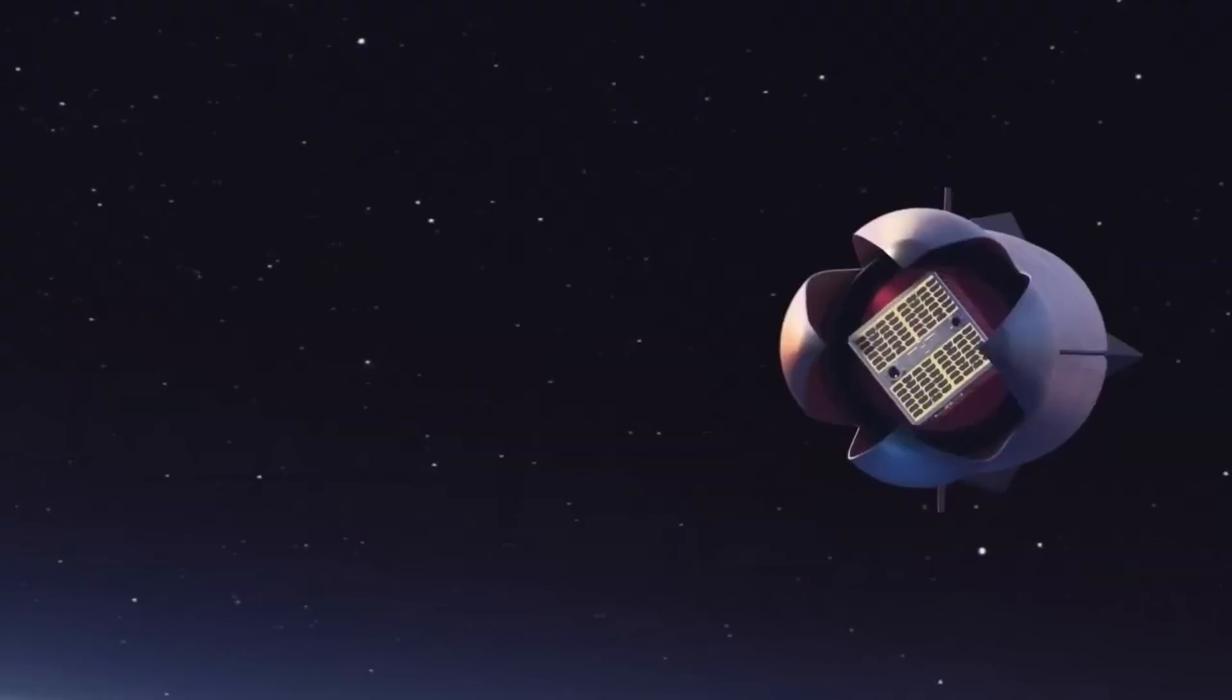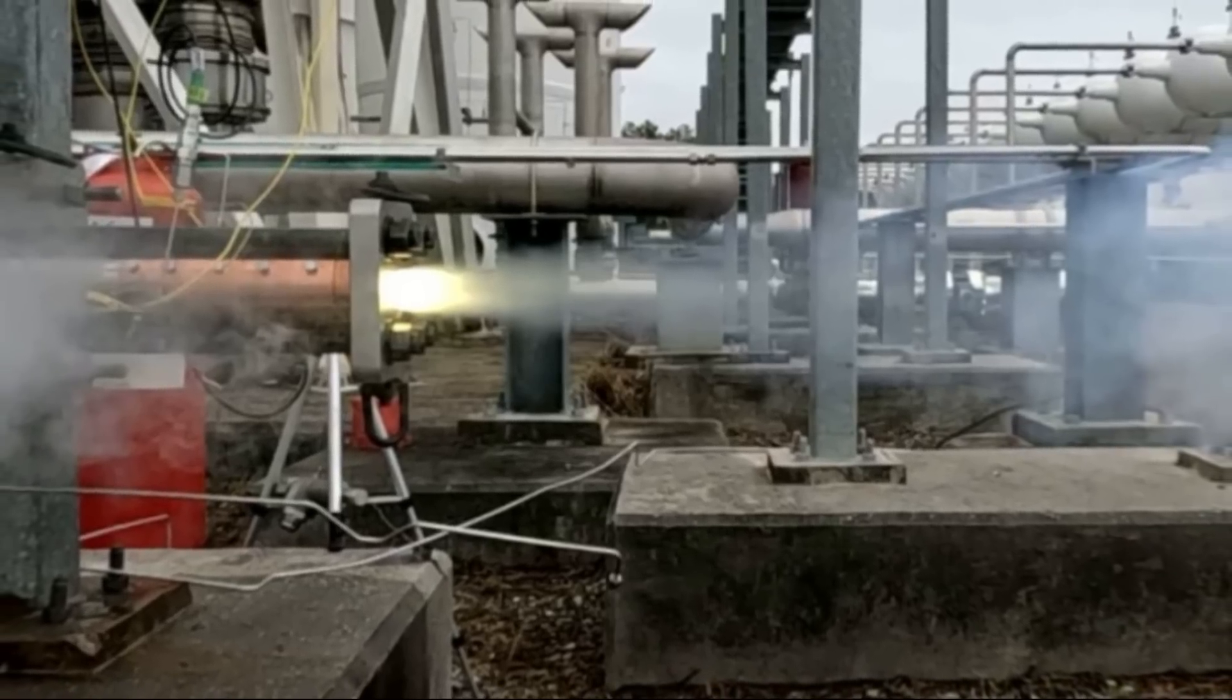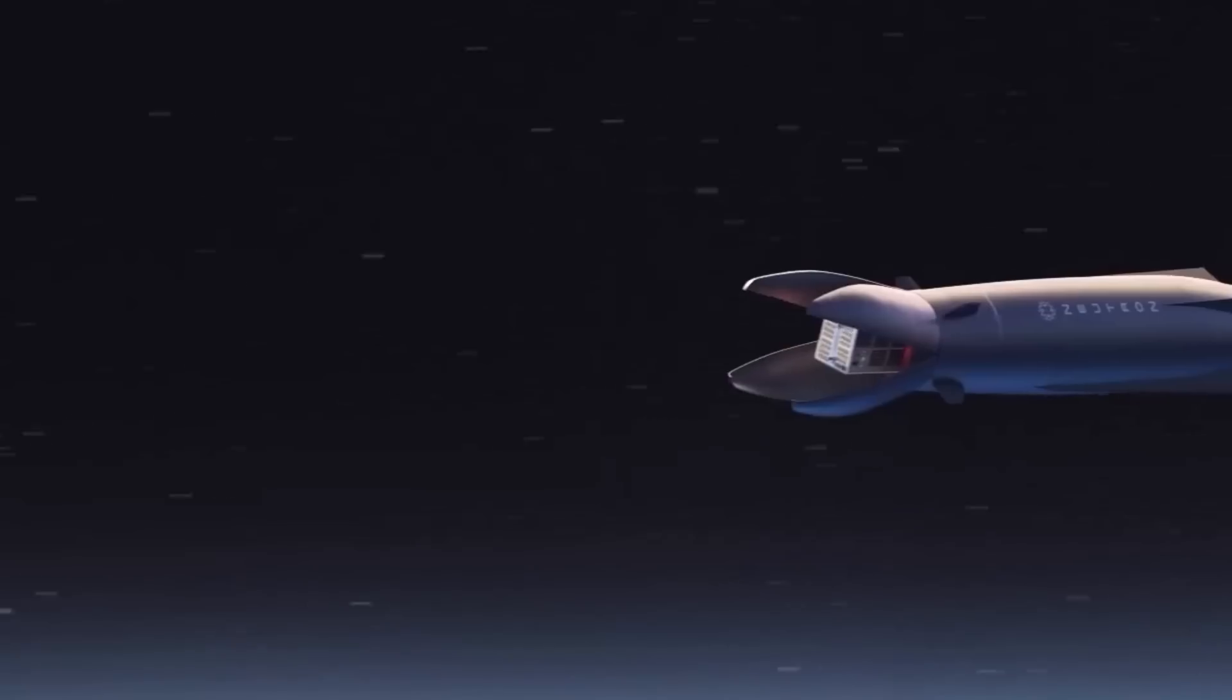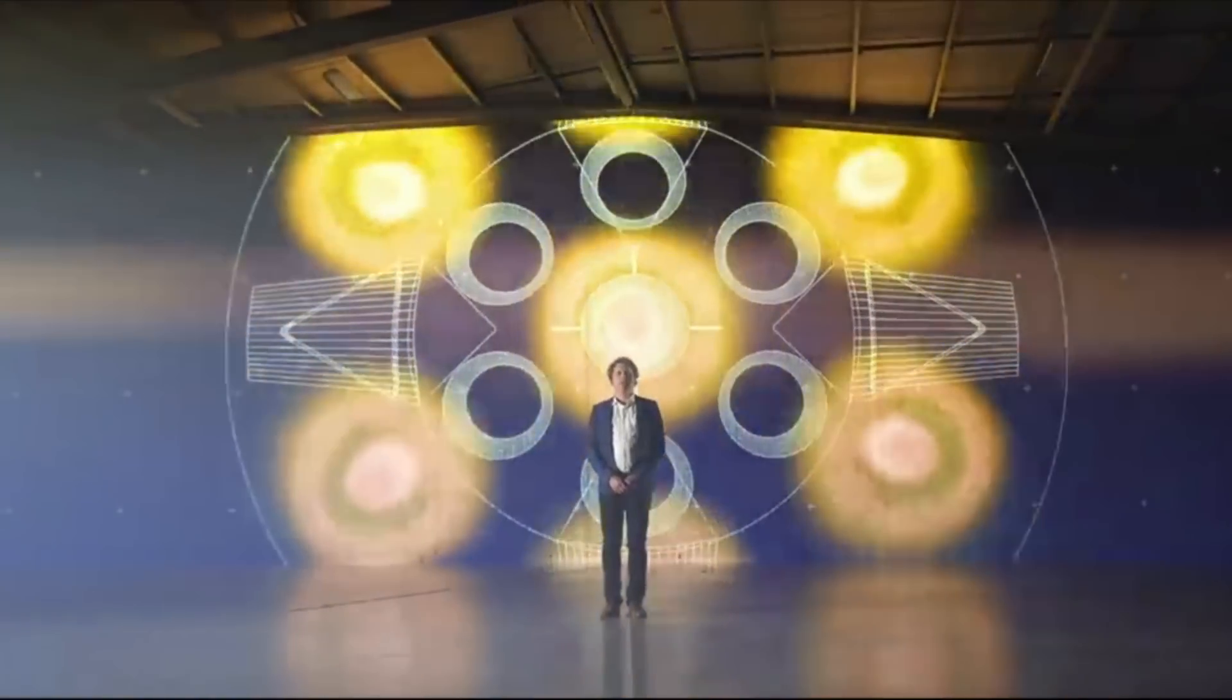While the rocket has important features such as reusable fairings and a new primary material, the engine development of Archimedes is arguably the most valuable. Neutron's future launch capability and opportunity for both quick and cost-effective reuse depend on it.